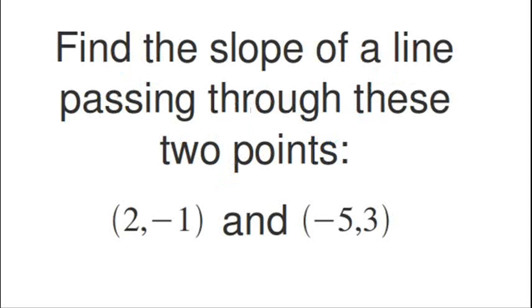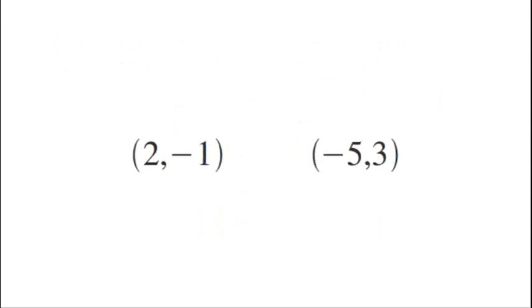Let's now take a look at an example. Find the slope of a line passing through these two points, 2, negative 1 and negative 5, 3. So what have we got here? We got two coordinate points. The first coordinates are 2, negative 1 and the second, negative 5, 3.